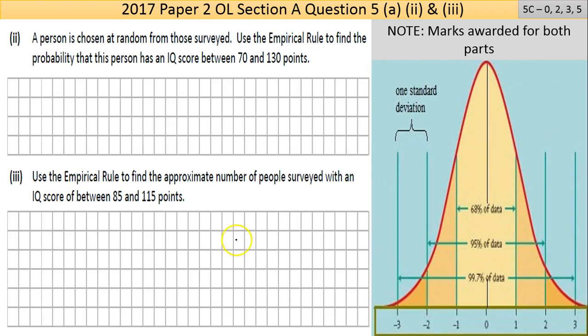Part (ii): A person is chosen at random from those surveyed. Use the empirical rule to find the probability that this person has an IQ score between 70 and 130. I've put in this graphic to help make sense of it. You see there your mean is at the normal distribution, your mean's down the middle. One standard deviation below and above represents 68% of the data, two standard deviations is 95% of data, and three standard deviations is 99.7% of data.